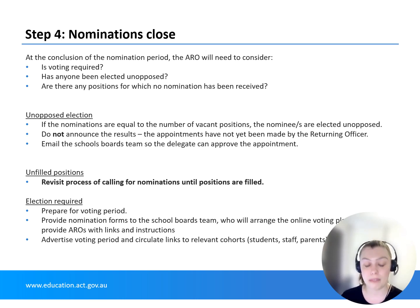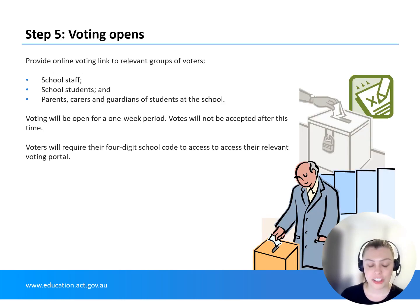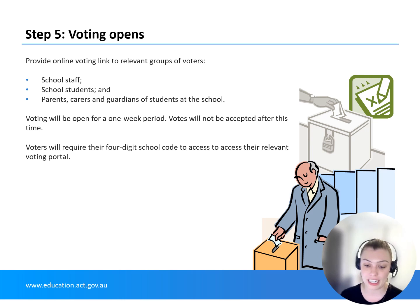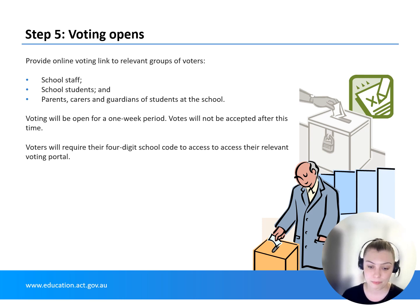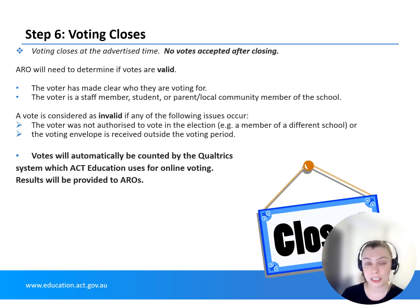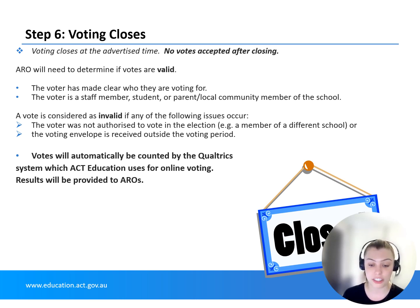Between the week of nominations closing and voting opening, the Education Support Office will organise the online platform for the online election and provide a link for AROs to disseminate amongst eligible voting classes — for example, staff for staff elections, students for student elections. Voters will require the school's four-letter code to access voting. Unless otherwise stated, voting will commence at 11am on the opening day and close at 11am on the closing day. At the end of the voting period, the Qualtrics system will automatically count the votes and provide a report to the school board's team to arrange appointment of successful candidates. Candidates can appoint a scrutineer at their discretion, who can receive a copy of the results through the ARO, but may not notify others of those results unless raising a dispute with the ARO and principal only.